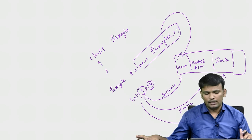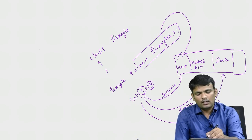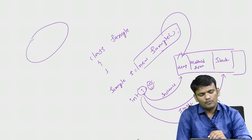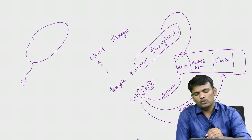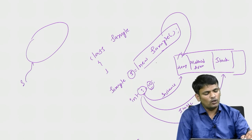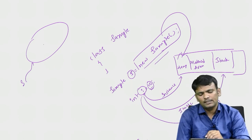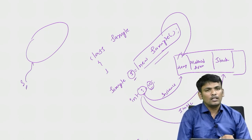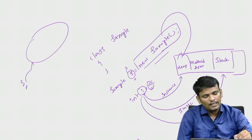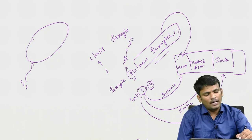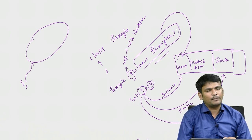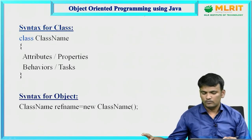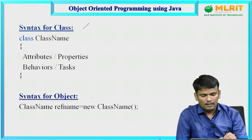To work with Java, at least one class is mandatory. To create a class, use the class keyword followed by the class name. Inside the class, represent attributes using variables and behaviors using methods. After creating the class, create an object using: class name, reference name, new keyword, and constructor.